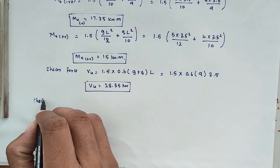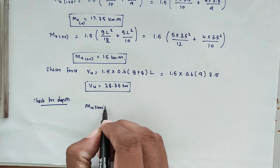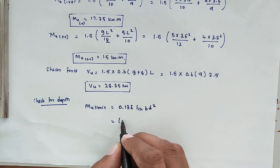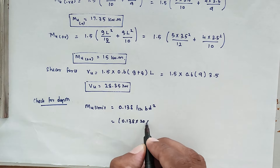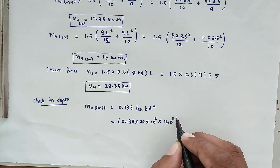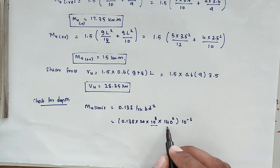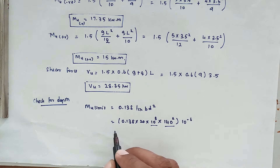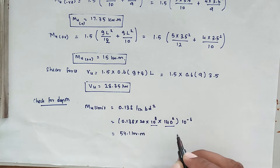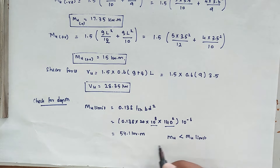Next, check for depth. Mu limit equals 0.138 × fck × b × d², substituting: 0.138 × 20 × 10³ × 140² × 10⁻⁶, giving Mu limit equals 54.1 kN·m. Since Mu is less than Mu limit, the section is under-reinforced, which is acceptable.